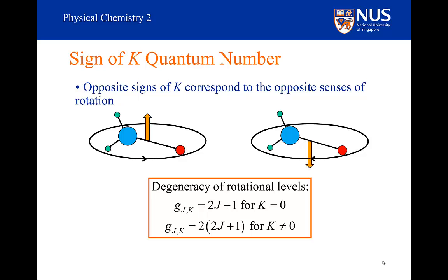For the degeneracy of rotational levels: when K = 0, there are 2J+1 degenerate levels, arising from MJ ranging from −J to +J. But if K ≠ 0, there are twice as many degenerate levels, because for every set of MJ levels, there is additional double degeneracy from the fact that energy levels with +K and −K are the same. All levels with K > 0 have this additional double degeneracy, in addition to the degeneracy from MJ.